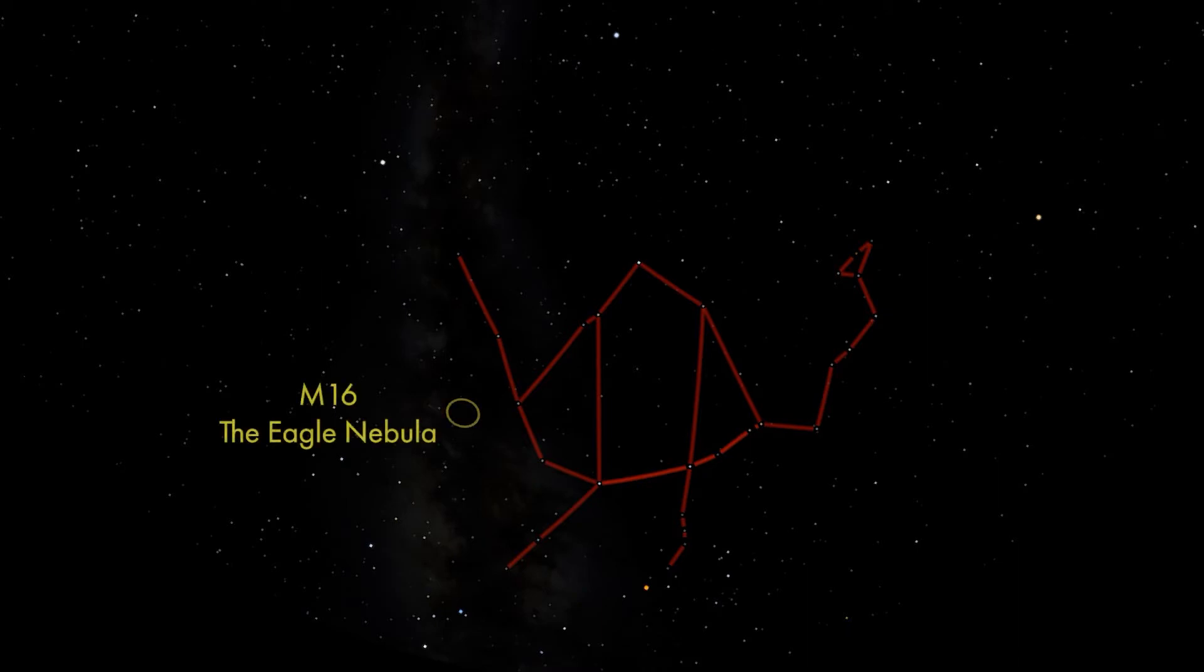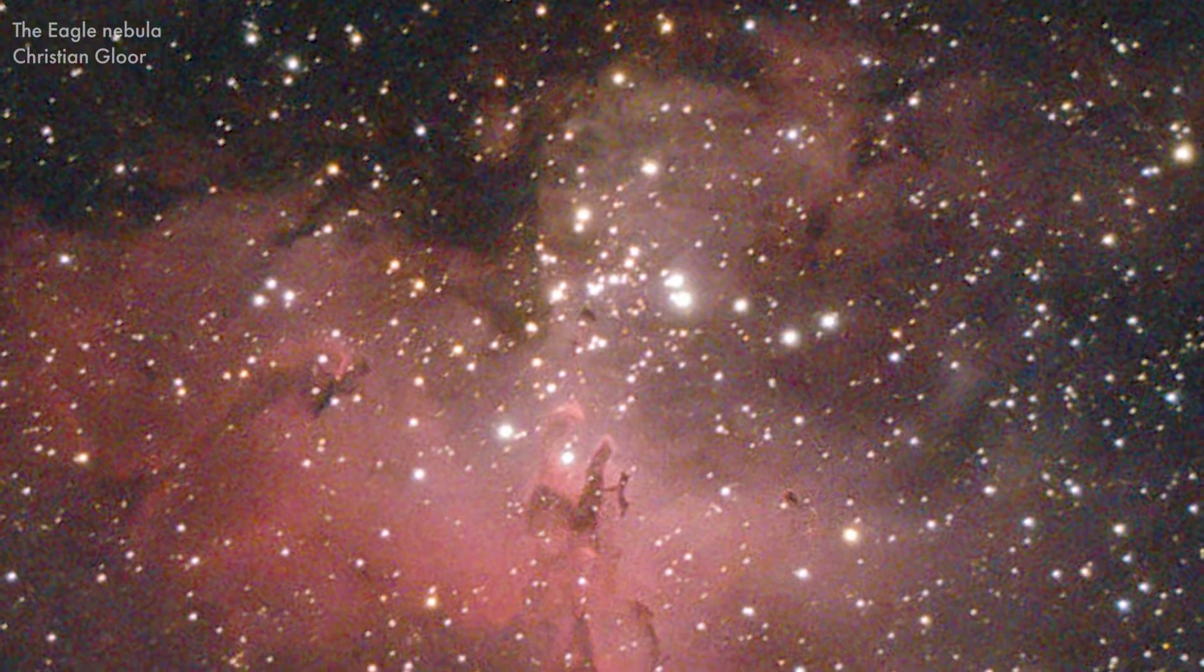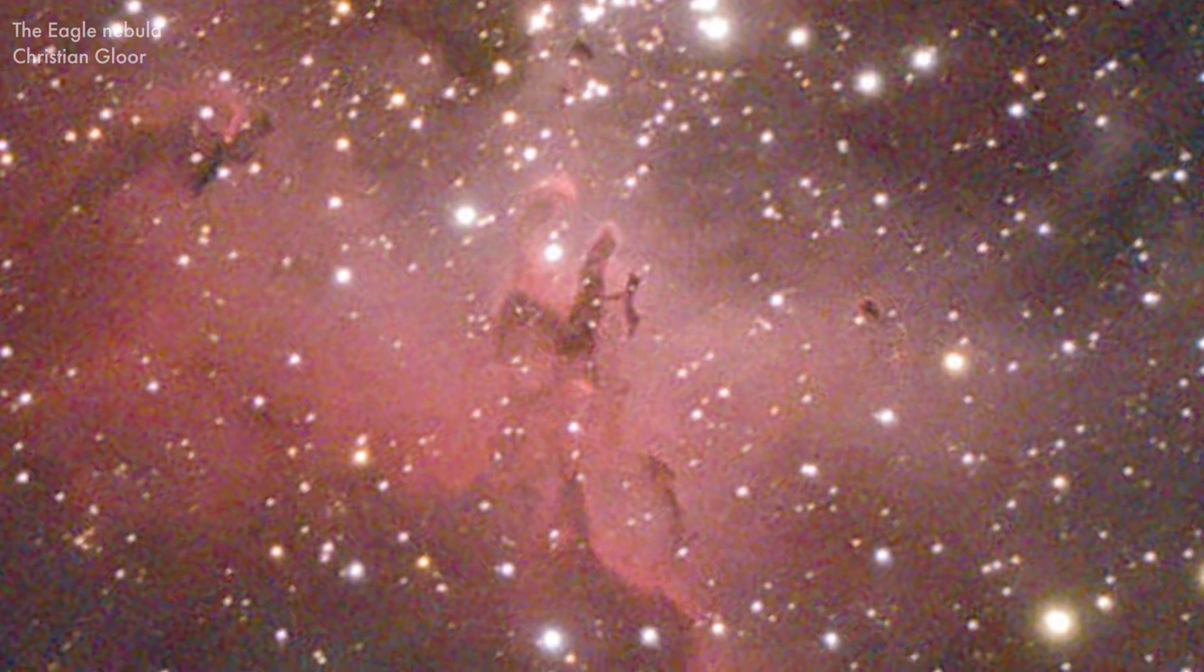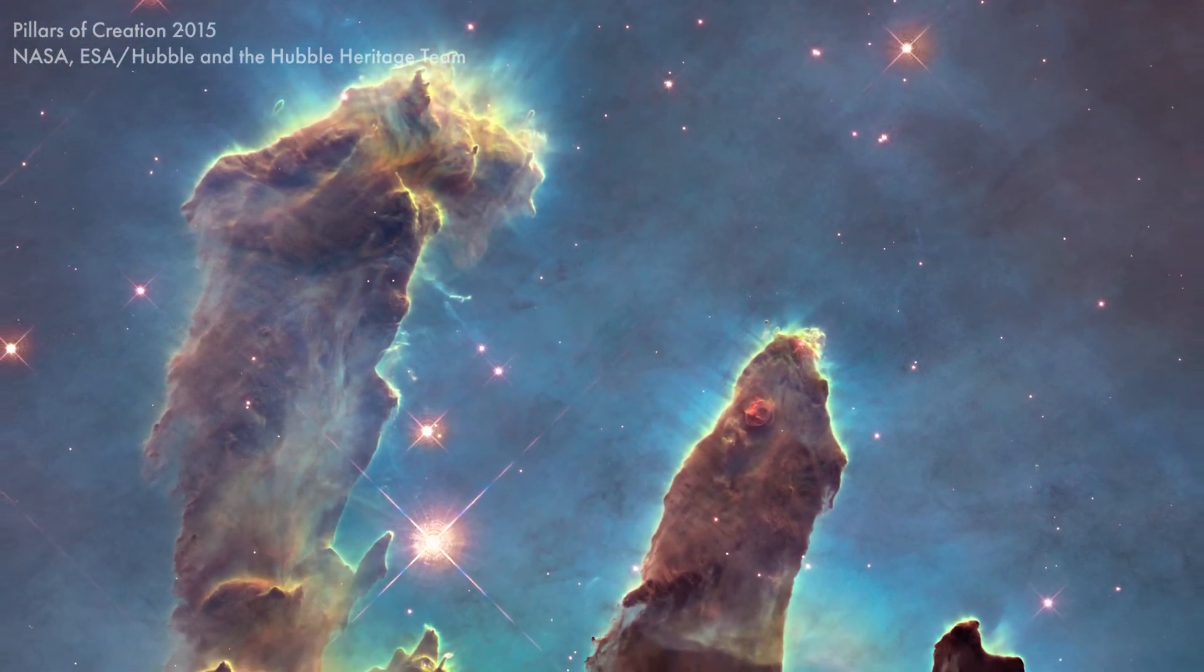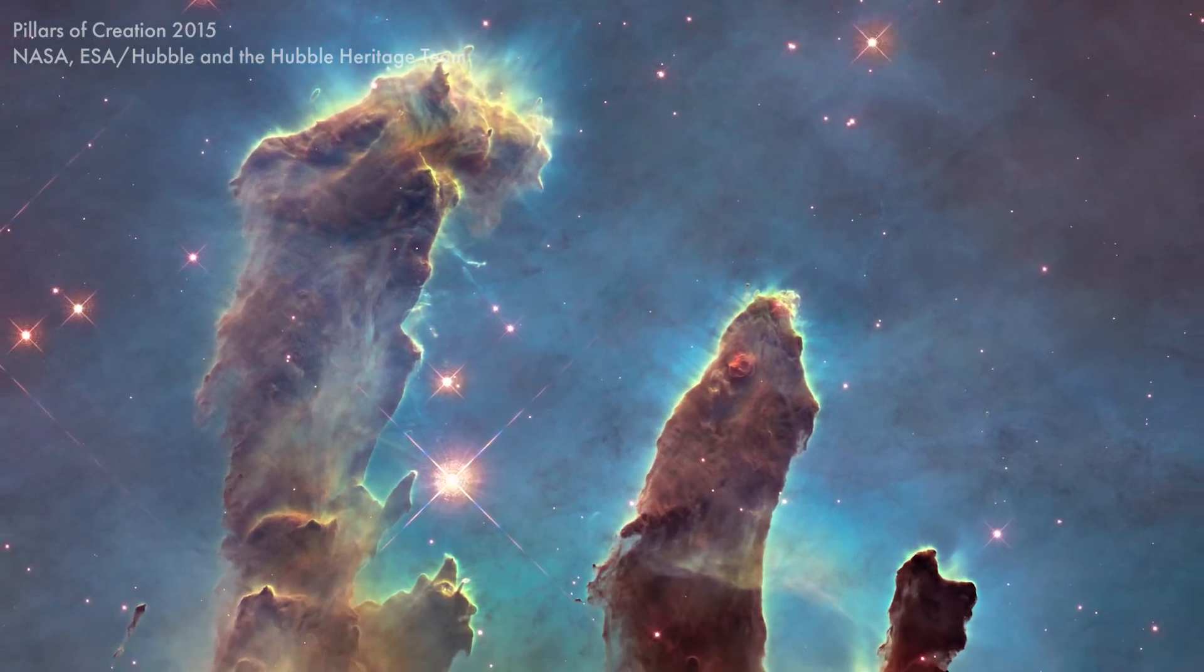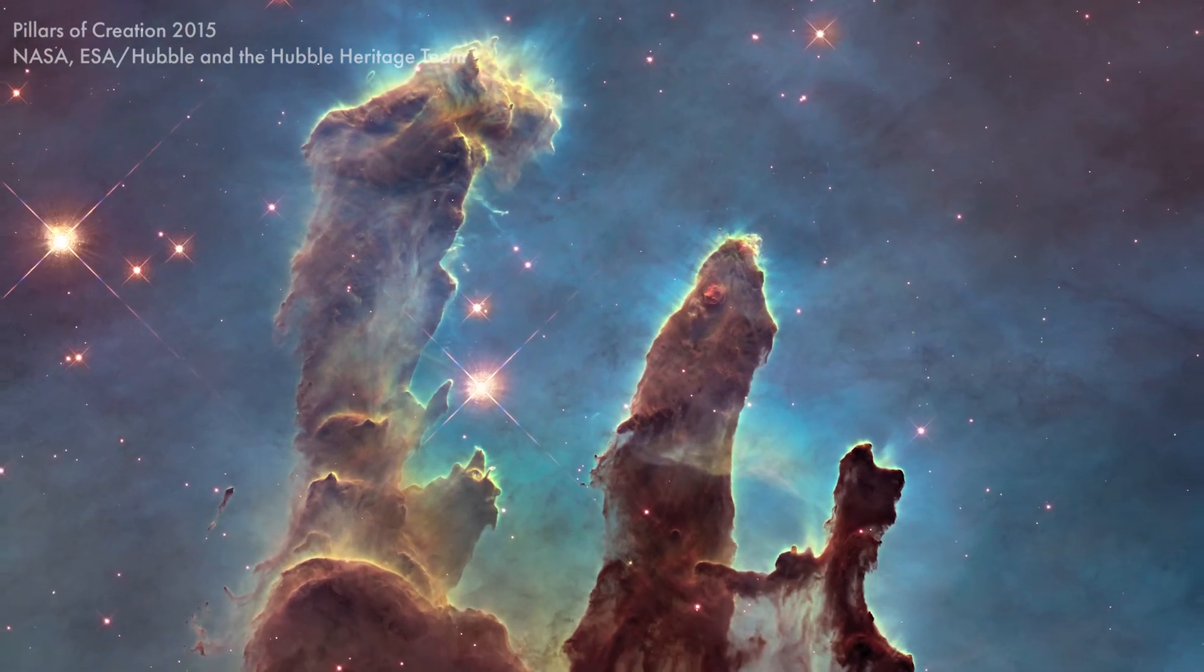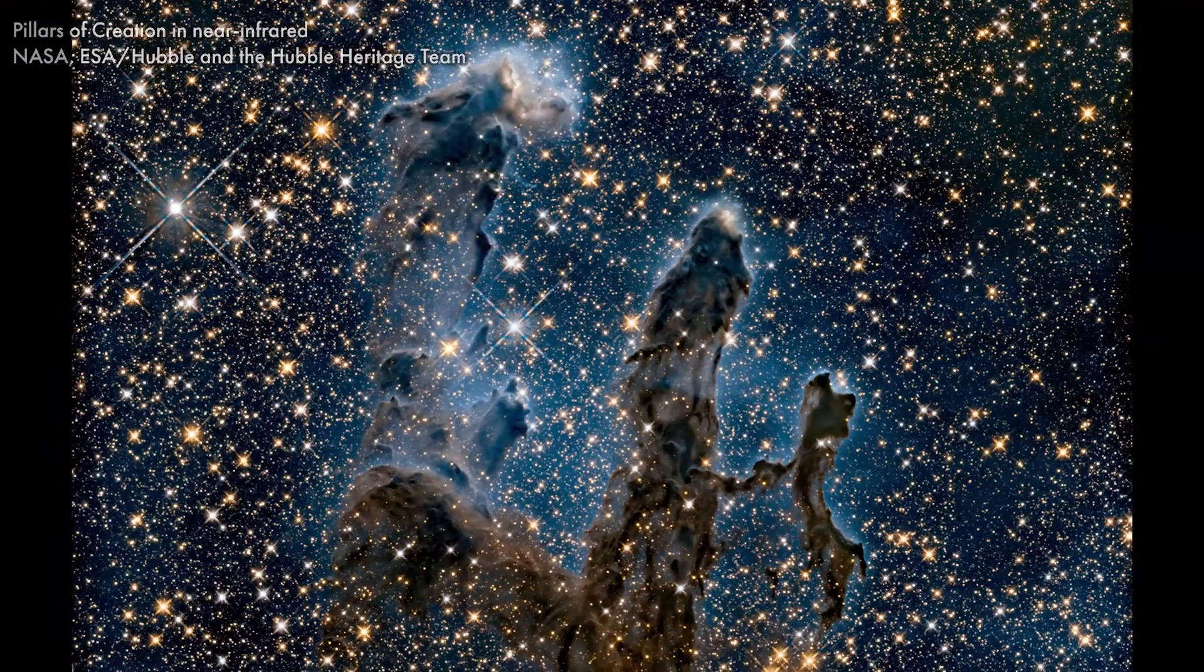Serpens is home to Messier 16, the Eagle Nebula. The Eagle Nebula is itself home to the Pillars of Creation, a set of pillars of dark dust made famous when they were photographed by the Hubble Space Telescope. The pillars are being eroded by the radiation of a nearby star out of frame. But in the meantime, the gas of those pillars is being compressed and undergoing the process of star formation. Those new stars are revealed when we examine the pillars in infrared light.